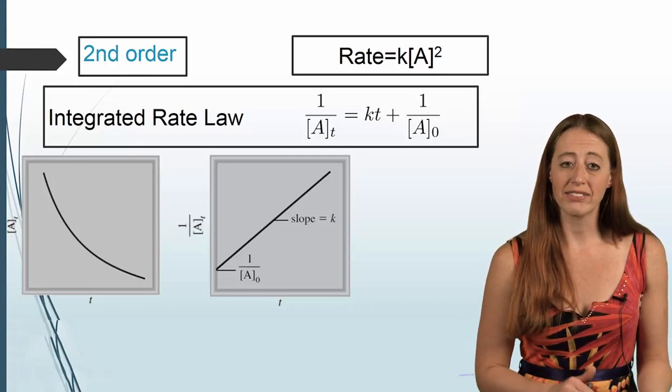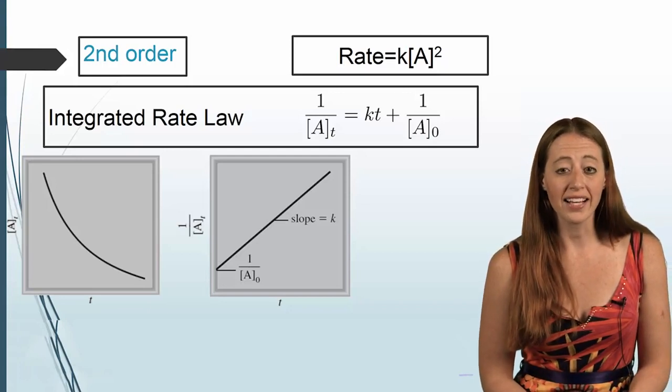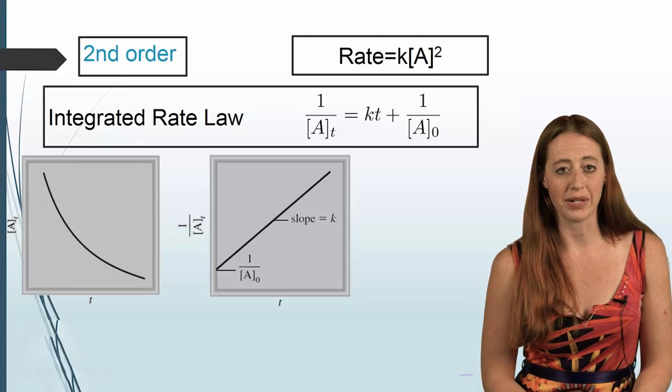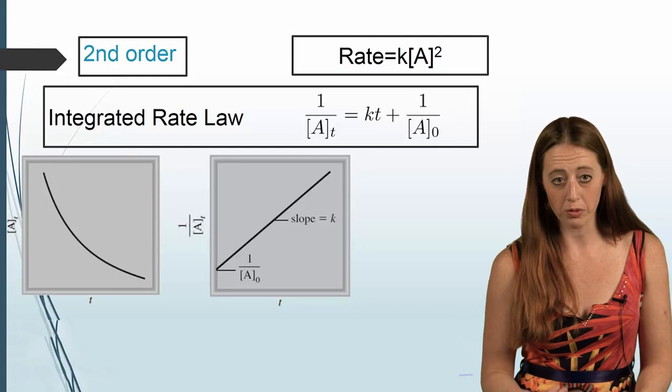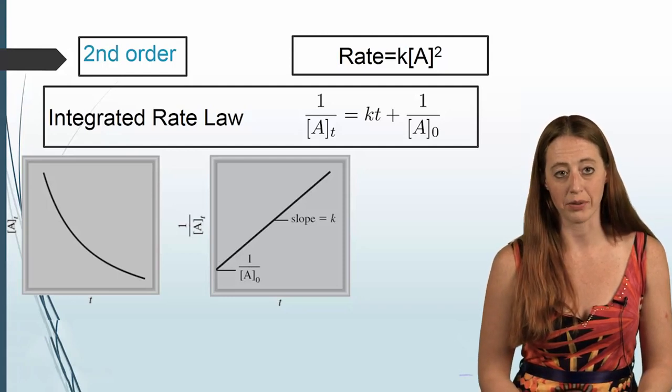So we have our rate law. We have our integrated rate law. And last thing, our half-life equation. Now just like with the other ones, you should be able to go from your integrated rate law to your half-life equation.